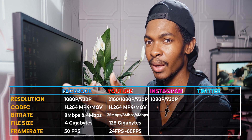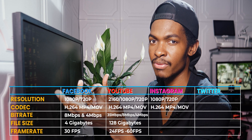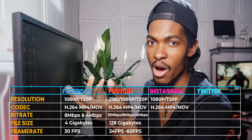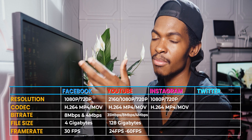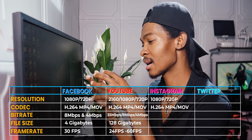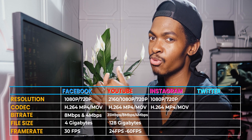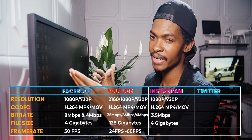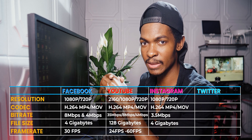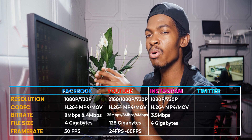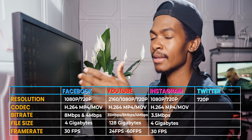For Instagram, the maximum recommended settings are: resolution — 1080p or 720p; codec — H.264 with MP4 or MOV files; bitrate — 3.5 megabytes per second; file size maximum — 4 gigabytes; frame rate — maximum 30 frames per second.